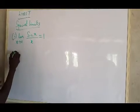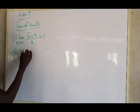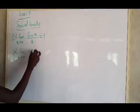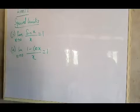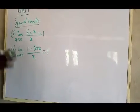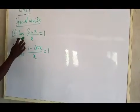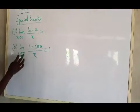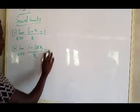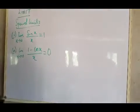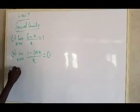The second special limit is: the limit as x tends to 0 of (1 − cos x)/x equals 0. You have to be familiar with both of these: sin(x)/x as the limit approaches 0 gives 1, and (1 − cos x)/x as the limit approaches 0 gives 0.